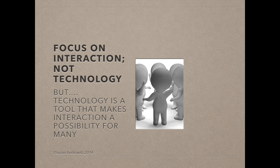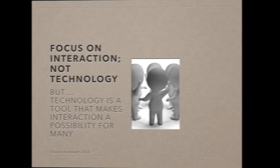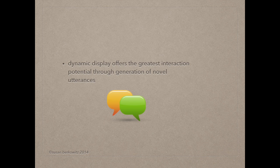The tool doesn't do the user any good if they can't use it to interact with people to communicate effectively. Dynamic display often offers the best option for true interaction by providing the user with the ability to generate whatever message they want to say. Novel utterances are comprised of separate words that are put together for whatever the person wants to say at the given time. Too often in the past and on static display devices, we try to guess what the person is going to want to say and provide whole phrases or sentences. AAC users who are able to tell us say that this can be very, very frustrating.